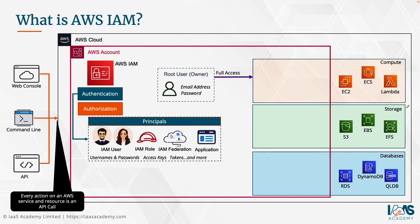And finally, you also have applications as principals. Imagine a web application that needs to access a back-end database on the AWS platform — that application needs to be authenticated as well. It needs to have the permission to talk to that database. The application takes the role of a principal, where you do need to give it a means of being able to authenticate itself against that database.